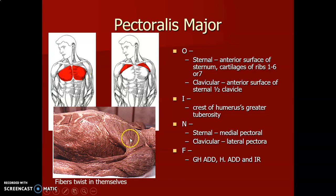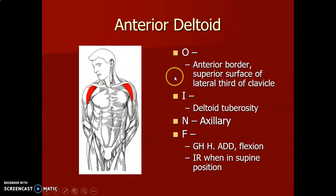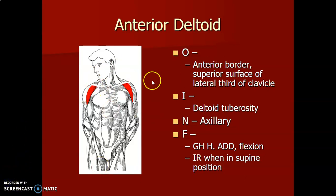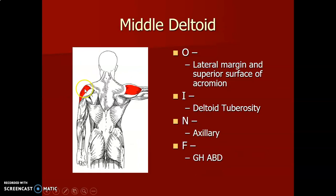Deltoid has three parts. The anterior deltoid comes from the anterior border and superior surface of the lateral third of the clavicle. It is innervated by the axillary nerve. It causes glenohumeral joint abduction, particularly abduction after the first 15 degrees — the first 15 degrees of abduction is initiated by the supraspinatus muscle.